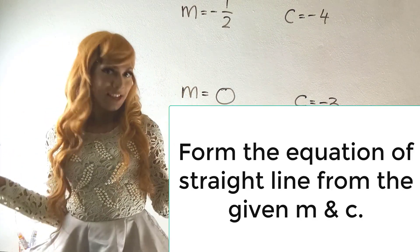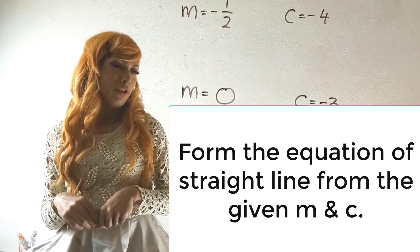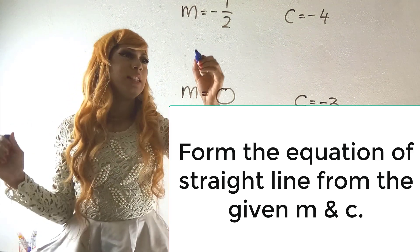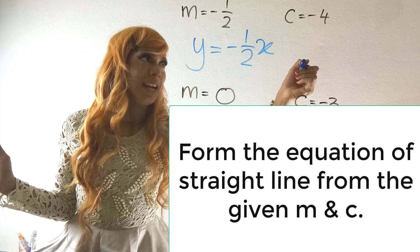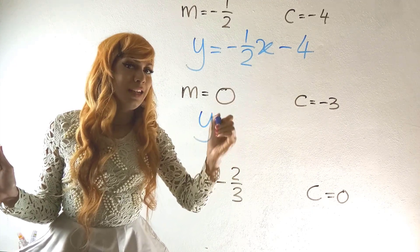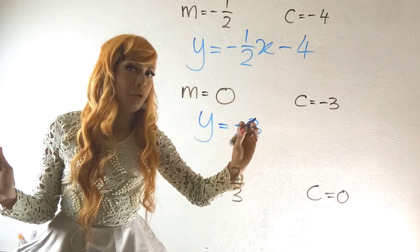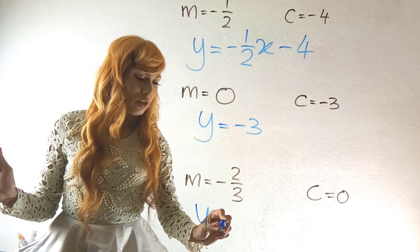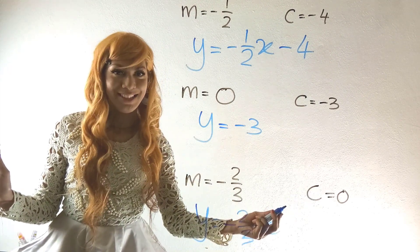For section three, you write the equation from a given gradient and y-intercept. Using y = mx + c: if m = −1/2 and c = −4, the equation is y = −(1/2)x − 4. If m = 0 and c = −3, then 0 times x disappears and we have y = −3. If m = −2/3 and c = 0, then y = −(2/3)x — no constant needed.